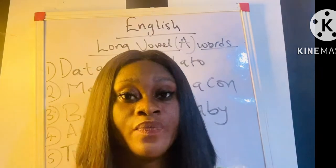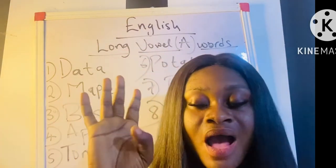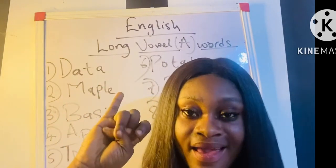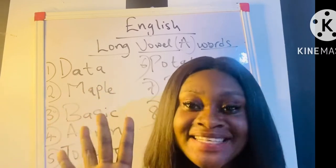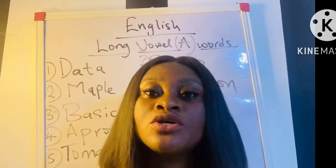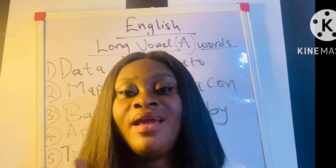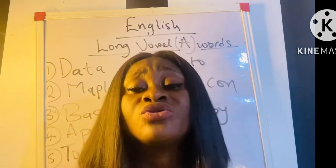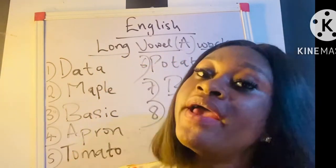We have five vowel sounds: A, E, I, O, U — five letters. So in my last video I taught us the short vowel sound A and the long vowel sound A. Today, for a clearer picture so you really understand, I am here with the long vowel A.